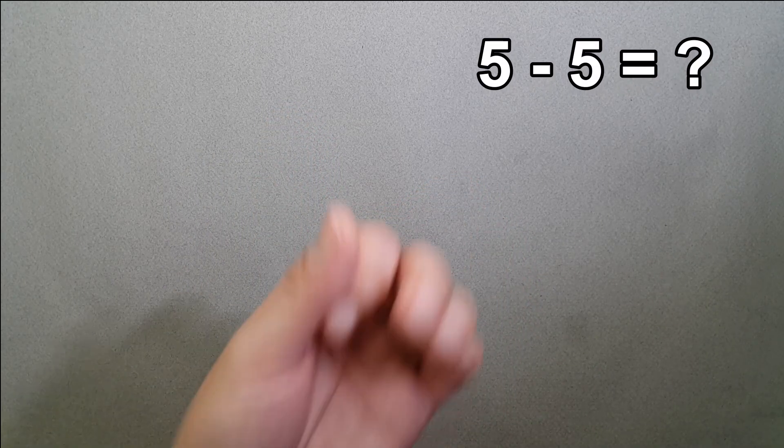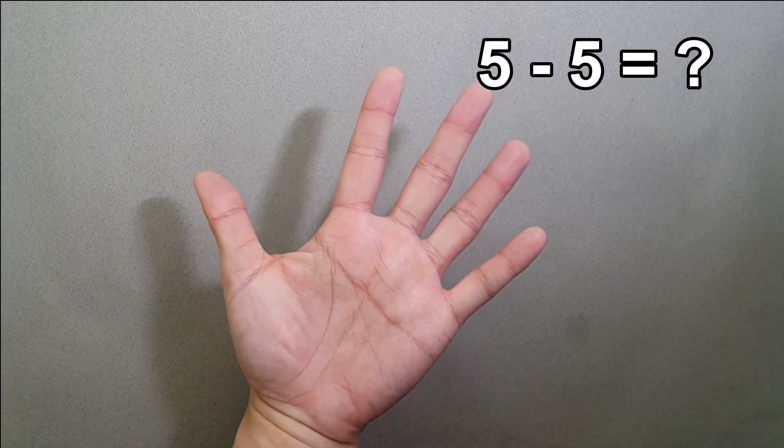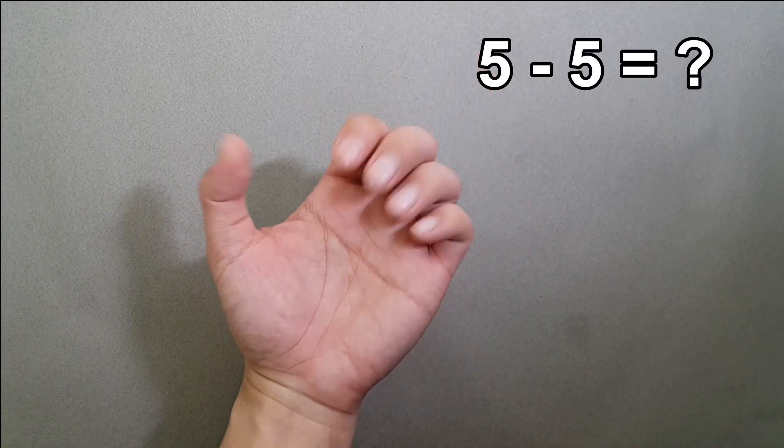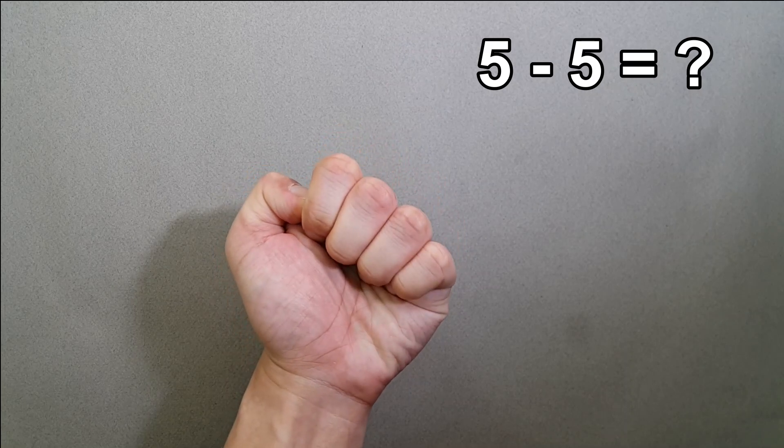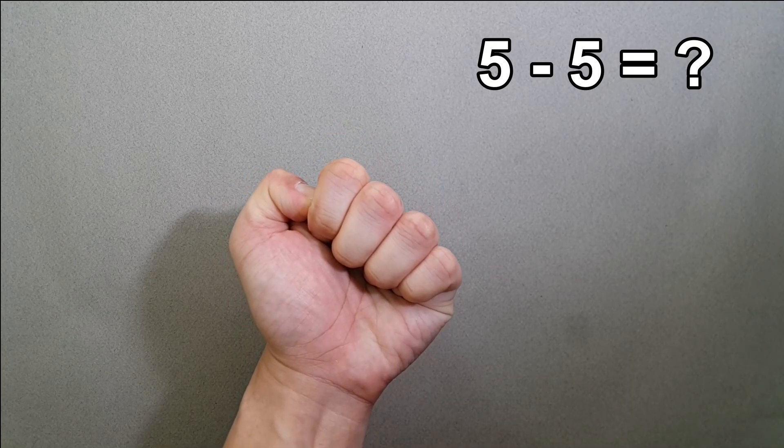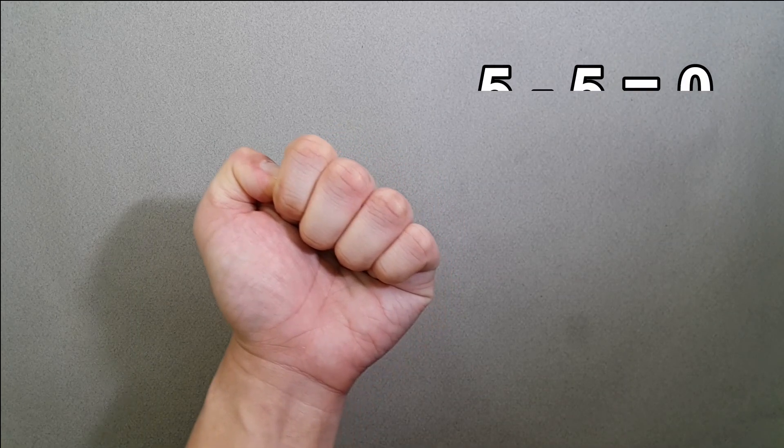What is 5 minus 5? 5 fingers, minus 5, equals 0. So 5 minus 5 is 0. What is 10 minus 1?